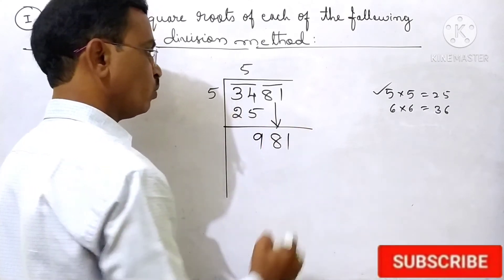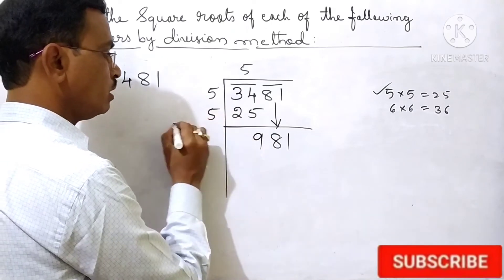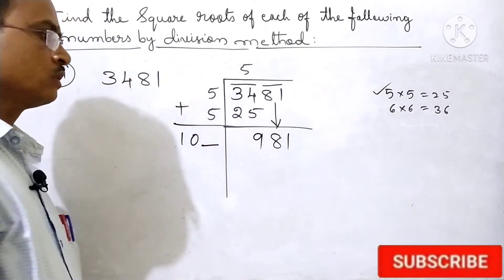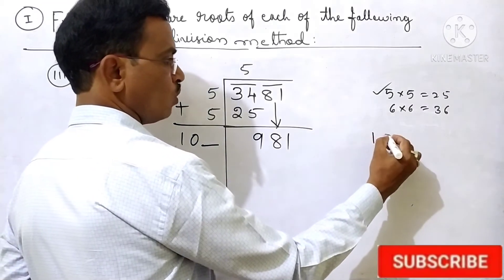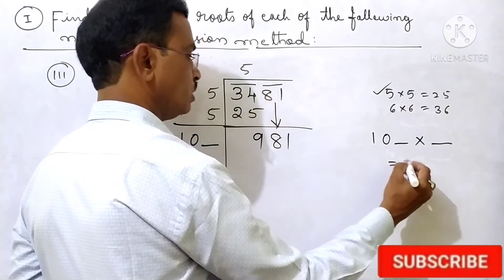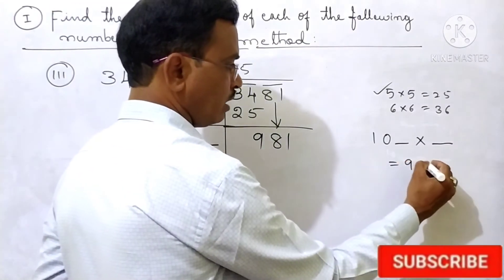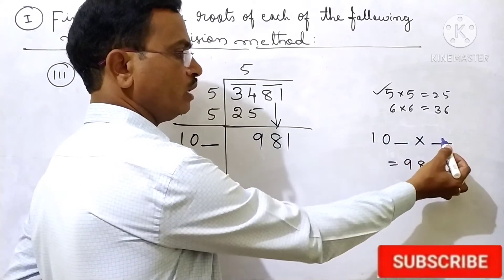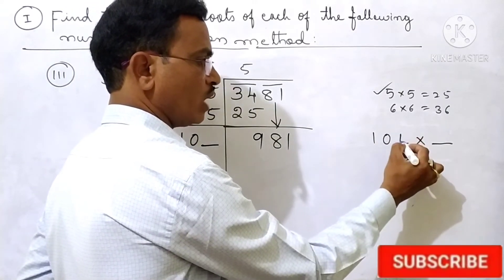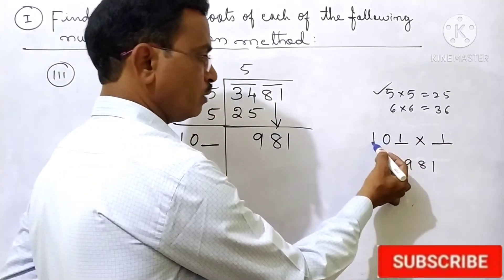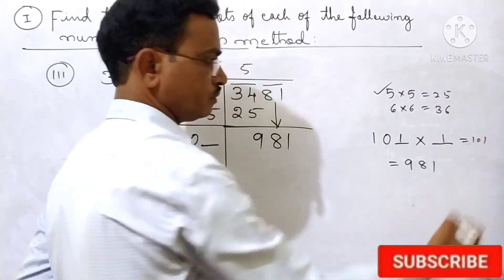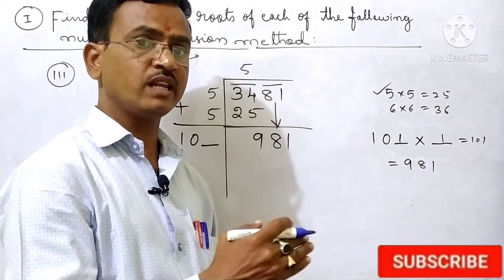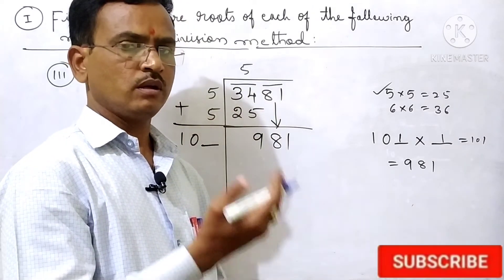Then you should take the last group 81. Now here 5 should be made double: 5 plus 5 is 10. Put a dash line. Now which number should we take here — 10_ × _. So here we want 981. Now if you take 1 here: 101×1. You see, I am taking 1 here, and here also you take the same number. So 101×1=101. In the unit place 1 is there. Next, we will go directly to 9: 9×9=81, in the unit place we get 1.